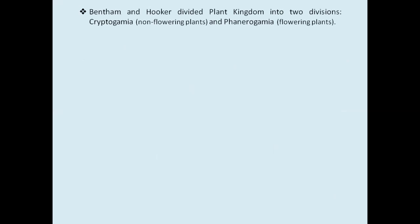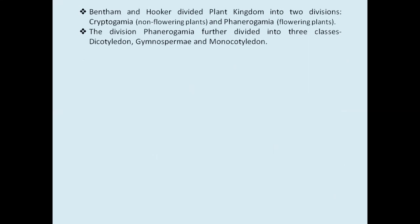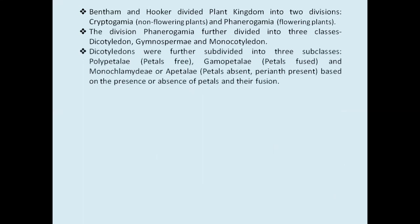Bentham and Hooker divided the plant kingdom into two divisions: division Cryptogamia, that is non-flowering plants, and division Phanerogamia, that is flowering plants. Division Phanerogamia was further divided into three classes: class Dicotyledons, class Gymnospermi, and class Monocotyledons. The class Dicotyledons were further subdivided into three subclasses: subclass Polypetali, subclass Gamopetali, and subclass Monochlamidae or Apetali, based on the presence or absence of petals and their fusion.